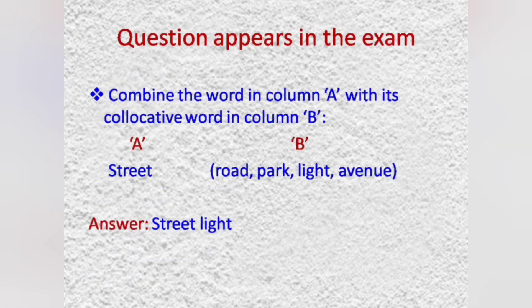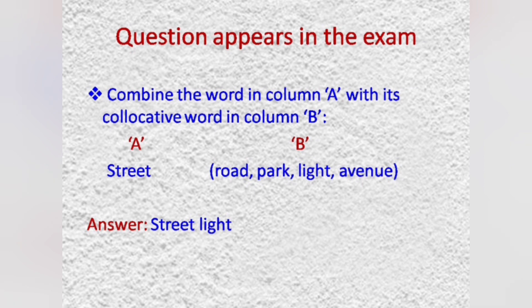And now we have reached the most important segment of this session. That is, the question that will appear in the exam will be like this. Combine the word in column A with its collocative word in column B. The word in column A is street and the words which will go together in column B are road, park, light, avenue. You need to choose the right word and write it in the answer. Street light. The word light goes well with street. So, the answer is street light.